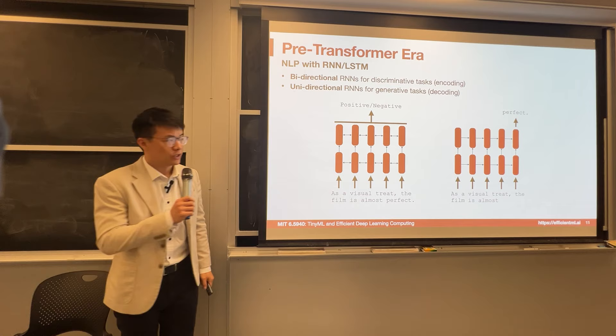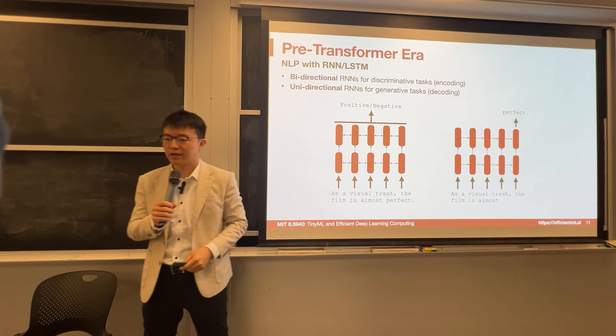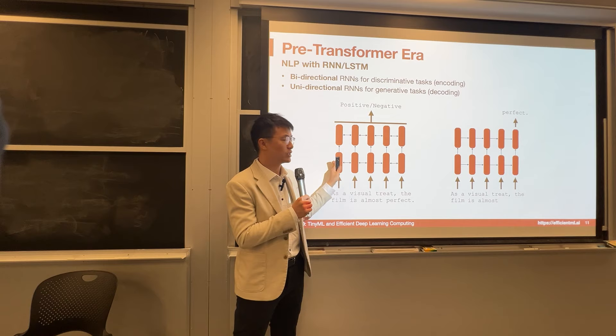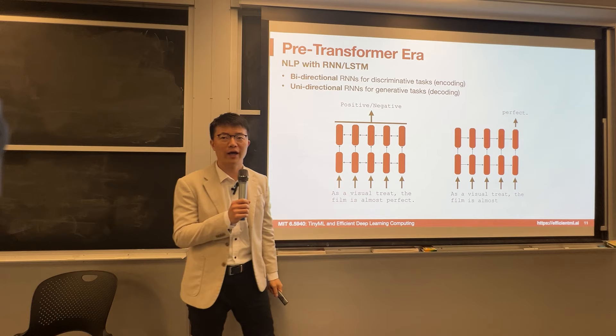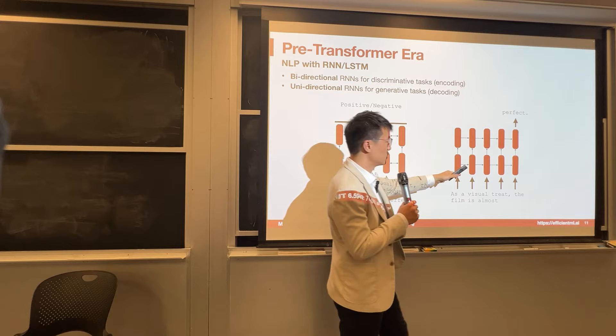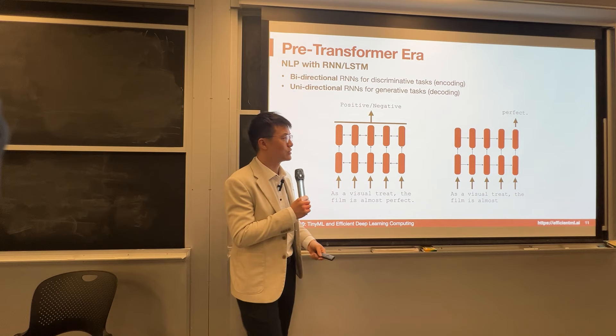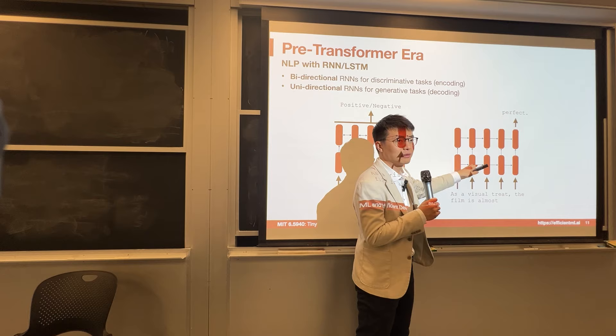There are two tasks: discriminative and generative. Using RNN or LSTM, we can use bidirectional RNN for the discriminative task, since bidirectional means you can see not only the current word but also future words — it is done offline. For the generative task, when generating a new word you can only see previous words, not future words. Therefore you can only have one direction of the hidden state.